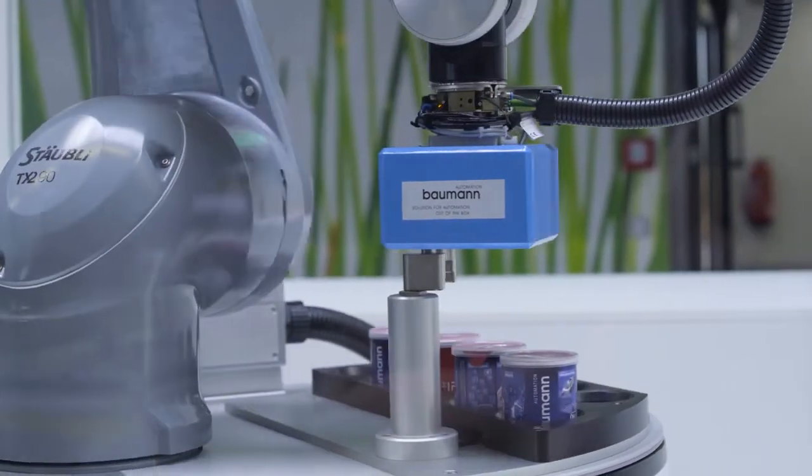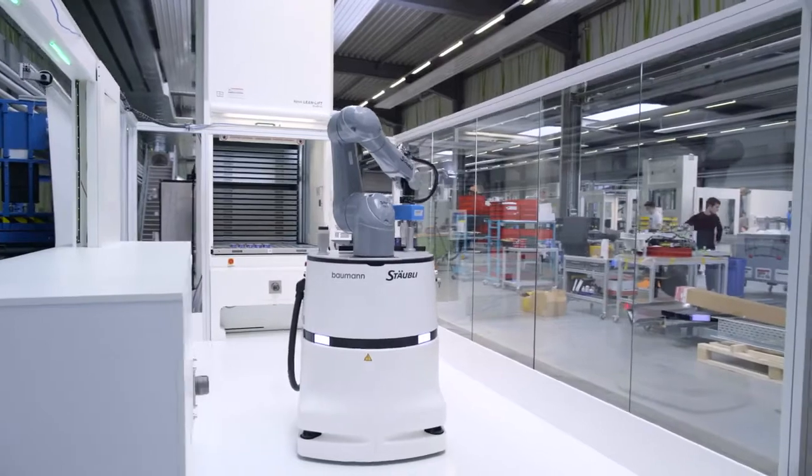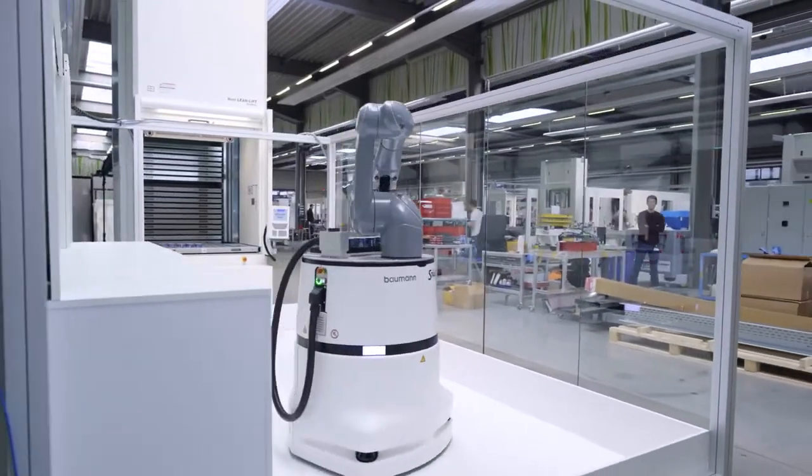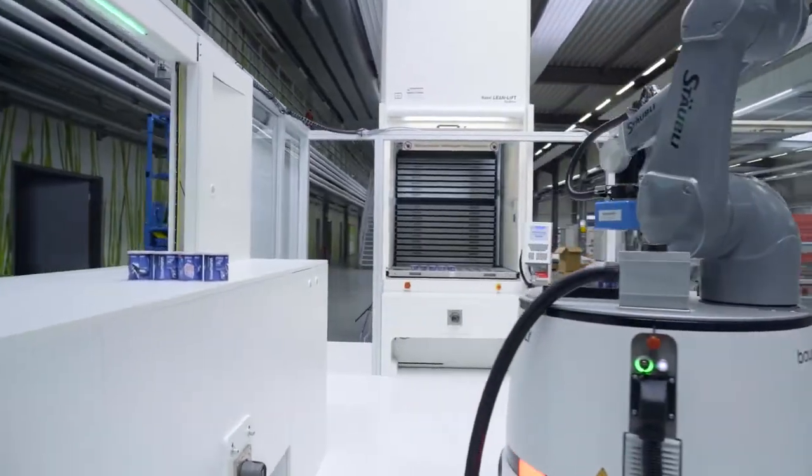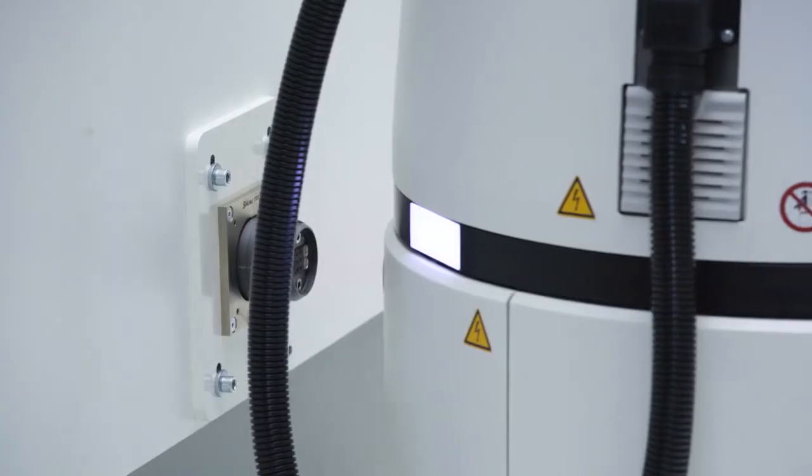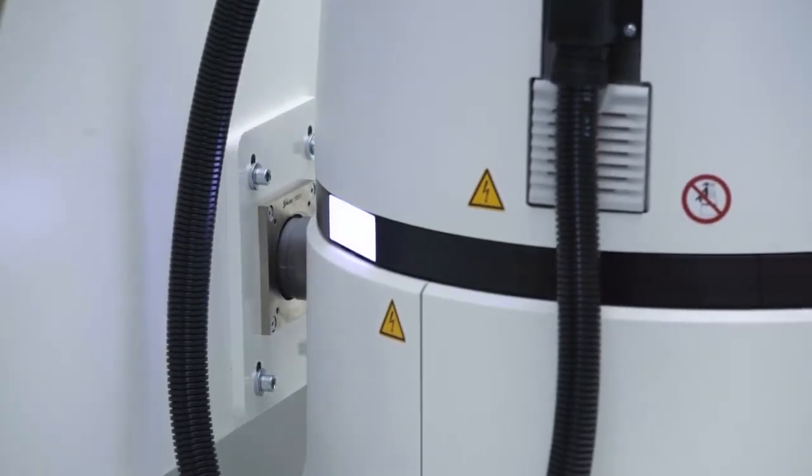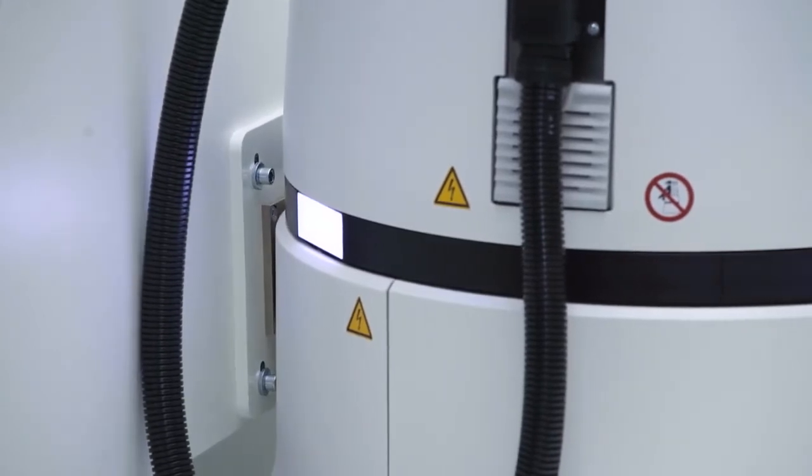For example, the robot can bring packages that have been opened on the production line back to the storage system and put them back into inventory. The Hainel lean-lift can also be used for buffer storage of items between various steps in manufacturing processes.